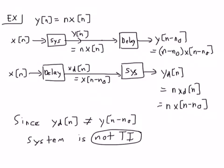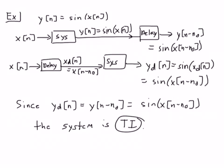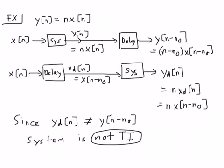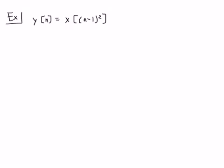Now we've seen an example of a system that is not time invariant and a previous example of one that is. Let's look at one more example before we wrap up. In this example, we'll take the system y(n) = x((n - 1)²).